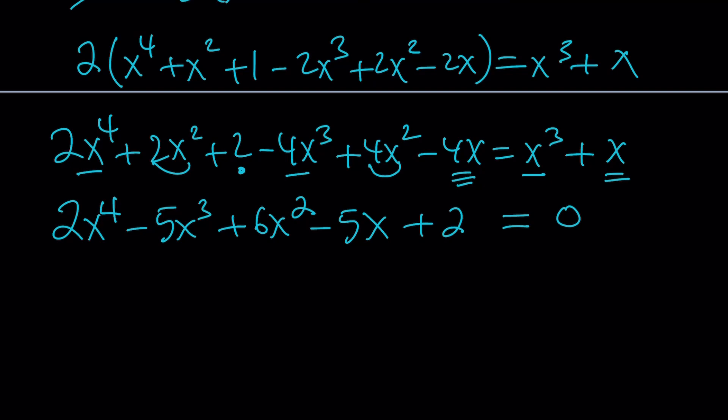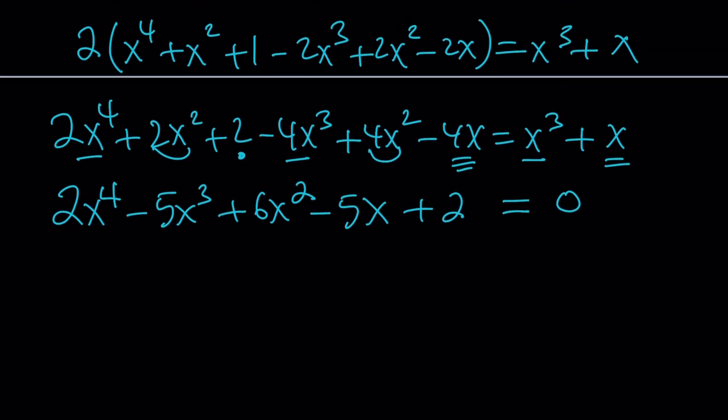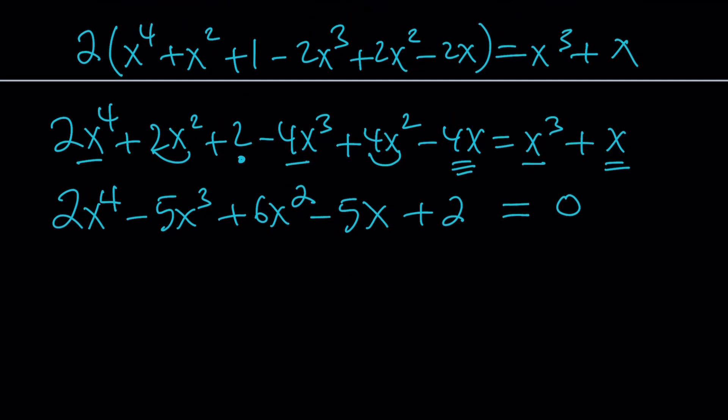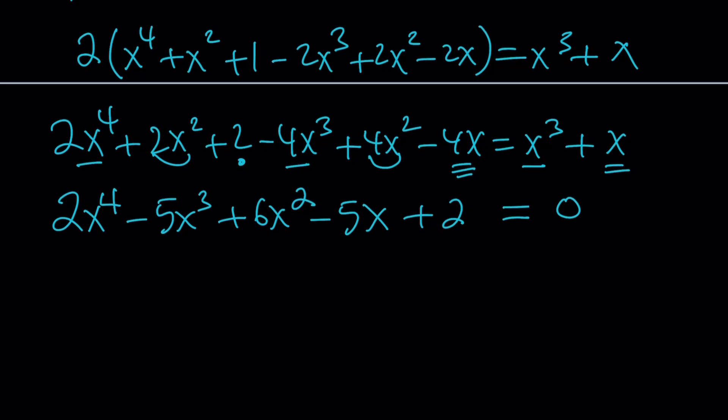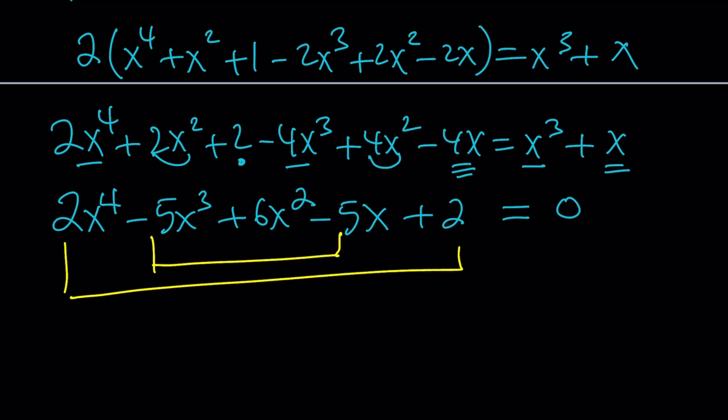This is a quartic equation, and there's a quartic formula, but it's pretty complicated. But there's something nice about this equation — if you look at it very carefully, you'll notice that this is a symmetric equation. Notice the first coefficient and the last one, the second and second from last, and the middle term by itself. We have negative 5 and negative 5, 2 and 2, with the middle term at the center.